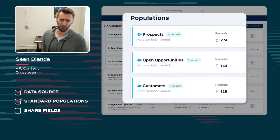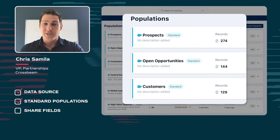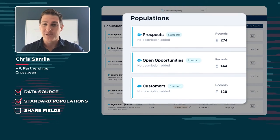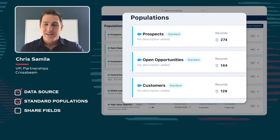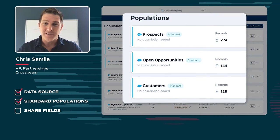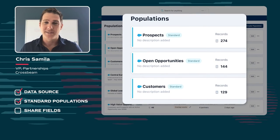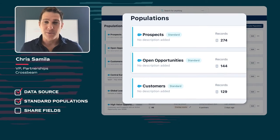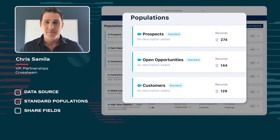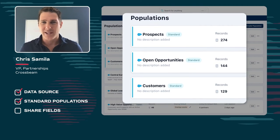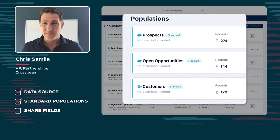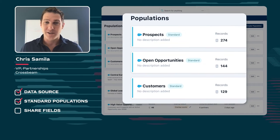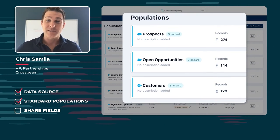The most common workflows kick off on the back side of these standard populations. You can also create custom ones — for our own team, as a PLG company, we look at free plan versus paid plan customers. The most important thing is to work with your Salesforce administrator or RevOps person — or if you're lucky, a partner ops person — to get the connection between your CRM and Crossbeam so you can identify customers, prospects, and open opportunities.